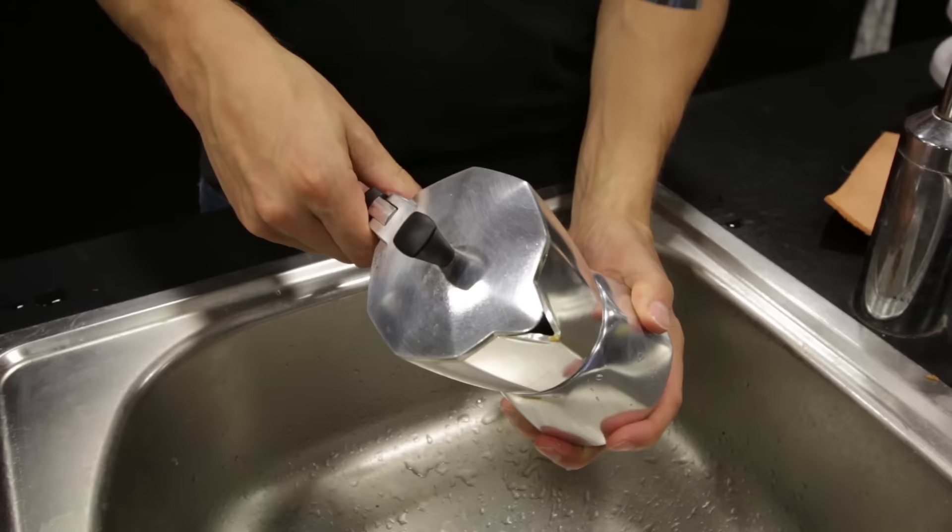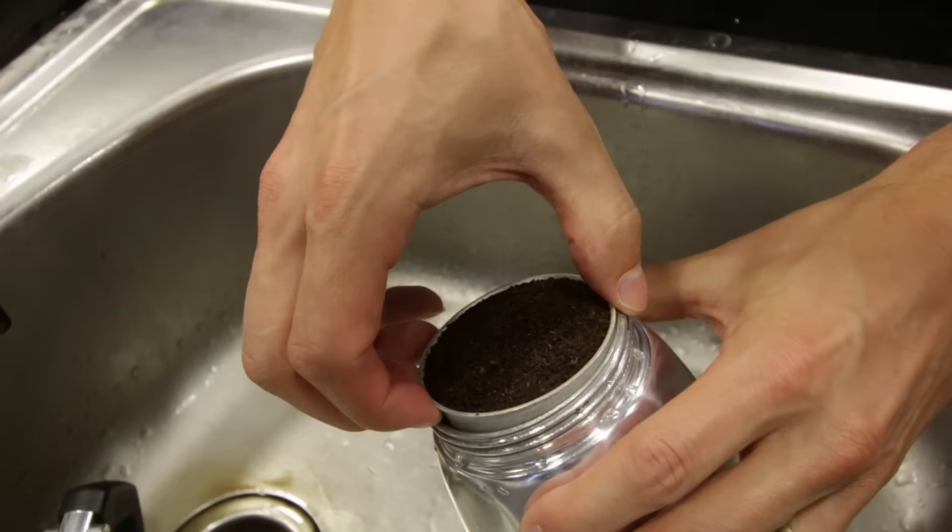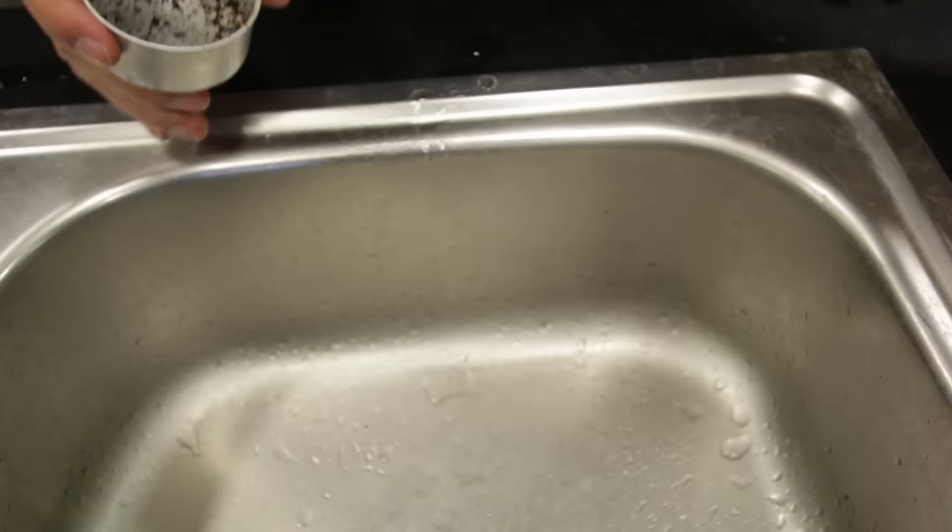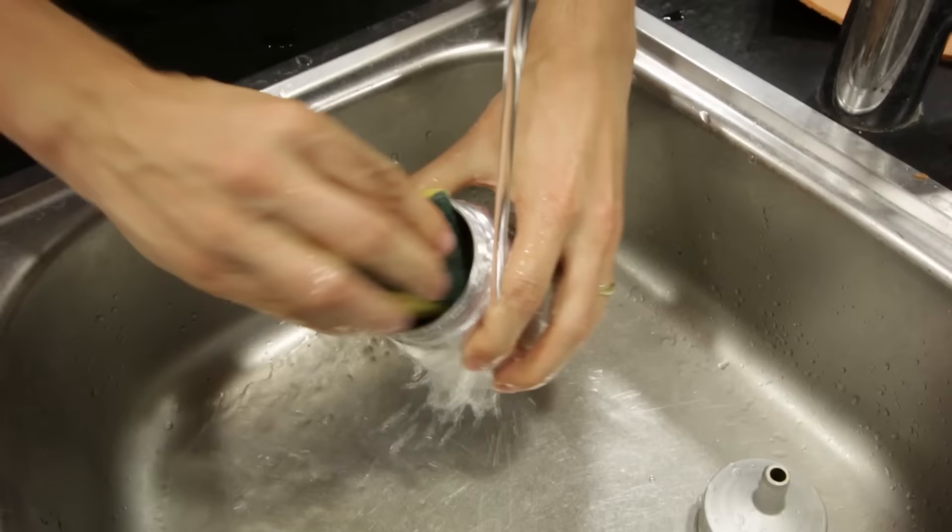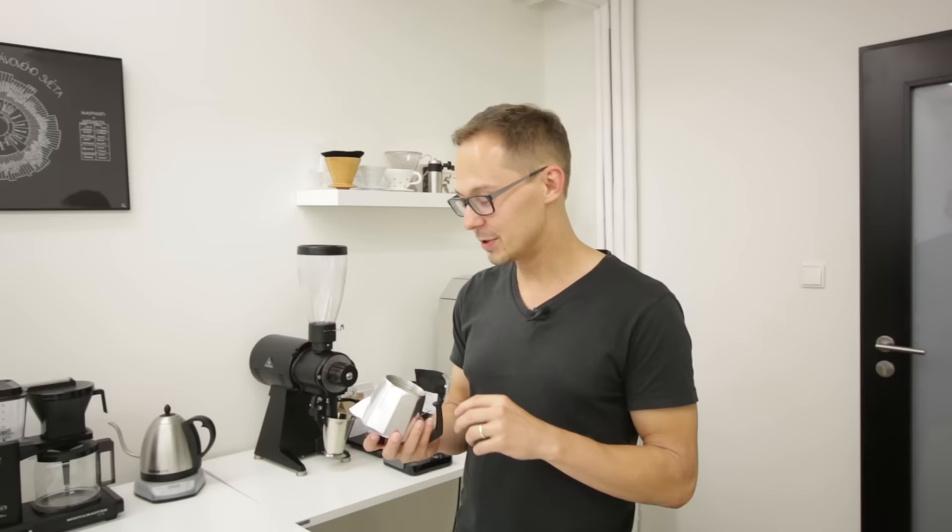As I told you, one of the biggest problems with the moka pot is the way people clean it, and actually probably that they don't clean it or don't clean it enough. Because not only should all three parts be cleaned from the side that you see—that's kind of obvious and you shouldn't really see the dirt on the outer parts.